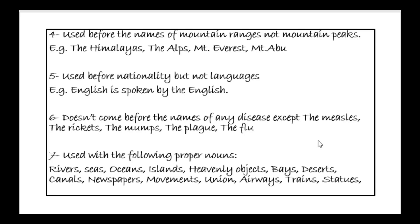Rule 4: 'The' is used before nationalities but not before languages. For example: 'the Indians', 'the Americans' — these are nationalities. But you would not say 'the English is spoken' when English refers to the language. However, 'English is spoken by the English' is correct — here 'the English' refers to nationality (a group of people), while 'English' alone refers to the language.